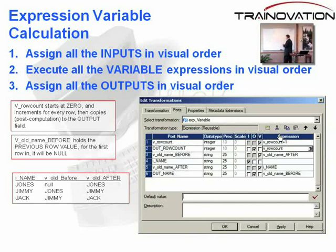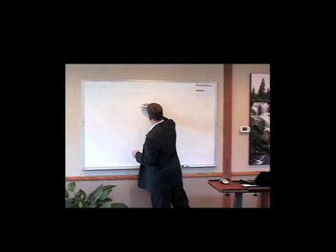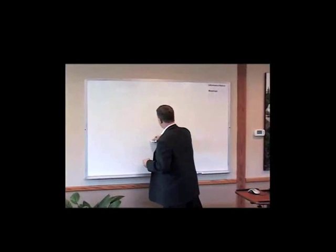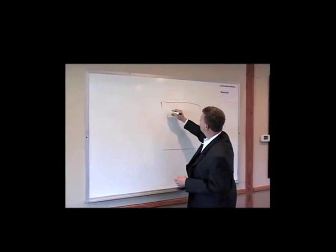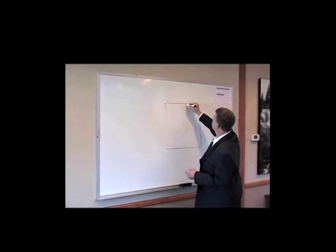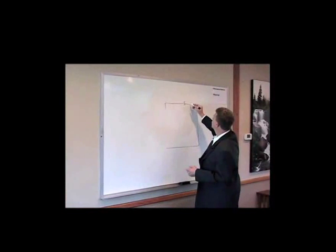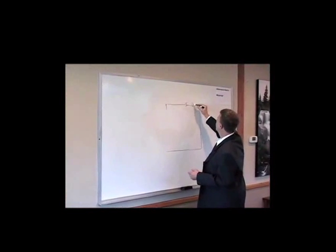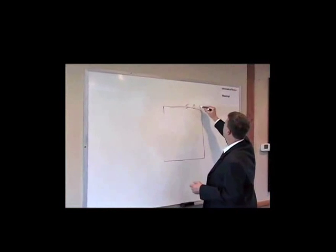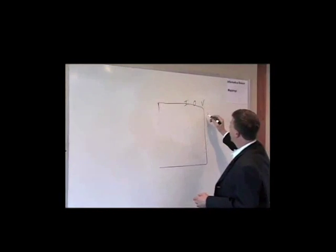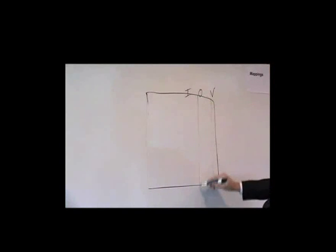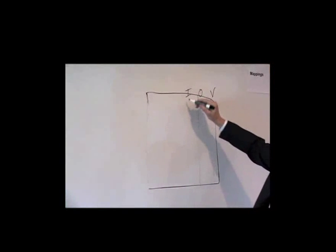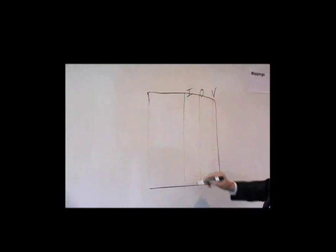Let's go to the board and see how that works. In an expression editor, we have the input, the output, and the variables — the I's, the O's, and the V's. These are the checkboxes in the columns for each of the fields.